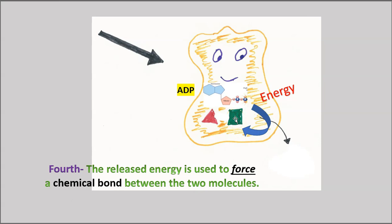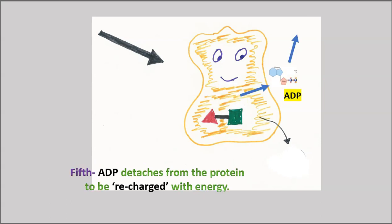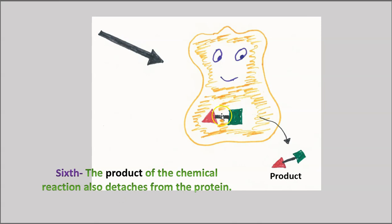Remember, you need energy to do this because the electrons in the molecules are going to repel each other. But if you can force them close enough together, you can get a chemical bond between your two nutrient molecules. And fifth, the ADP is going to detach from the protein, and it will go back to the bank proteins to get recharged with energy. Then the product of the chemical reaction is going to detach from the protein.